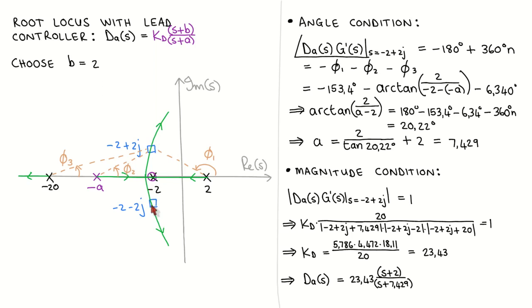The angles between the open loop poles and one of the closed loop poles are shown in orange. We determine the controller pole by using the angle condition. The angle of the loop transfer function evaluated at one of the desired closed loop poles should be minus 180 degrees plus an integer multiple of 360 degrees. The angle at minus 2 plus 2j is given by minus phi_1 minus phi_2 minus phi_3. We write the angle phi_2 in terms of the unknown value a, and after solving for a, we see that the controller pole should be located at minus 7.429.